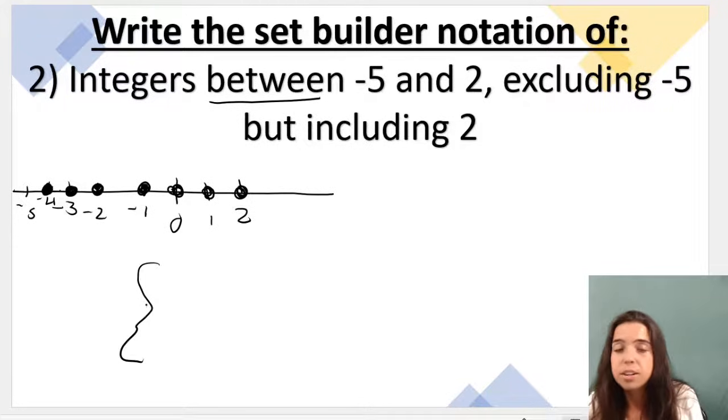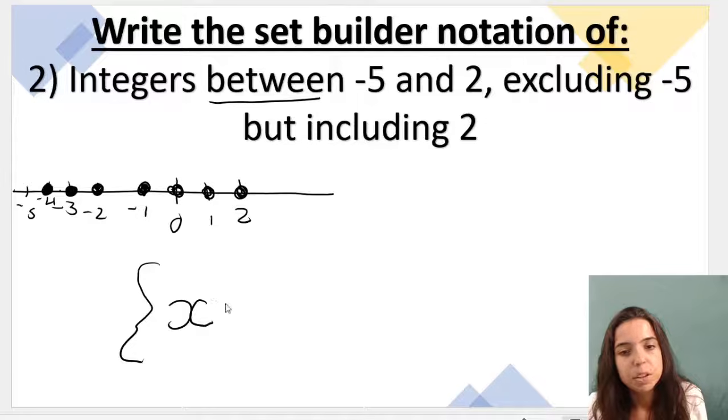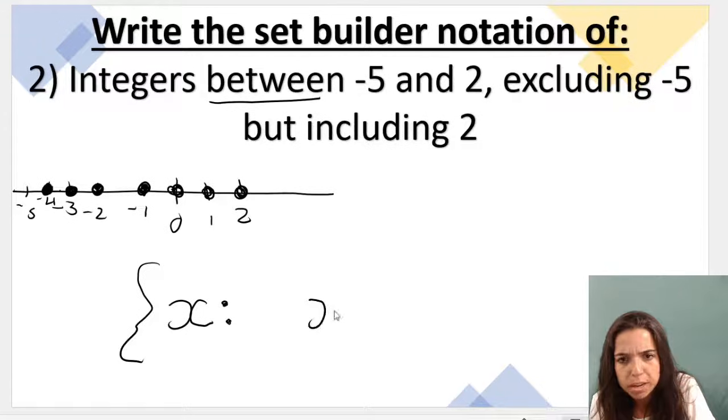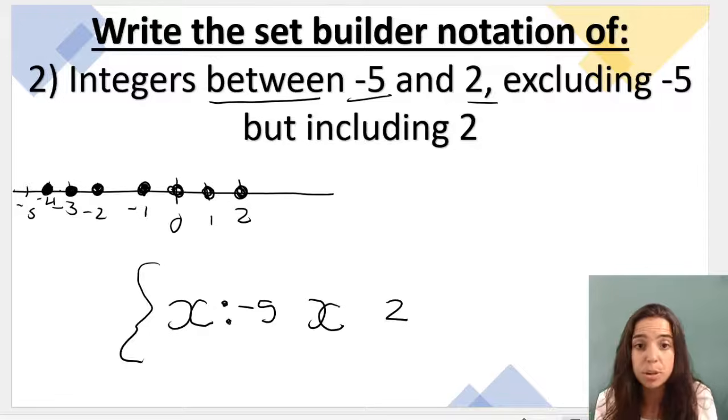Curly brackets. Then we're going to go x, then we're going to colon. Now x is between two numbers. So we need to put x between two numbers, so x goes in the middle. Which number is smaller, negative 5 or 2? Negative 5 is smaller. So negative 5 goes there, 2 goes there. Now you need to think about your symbols.